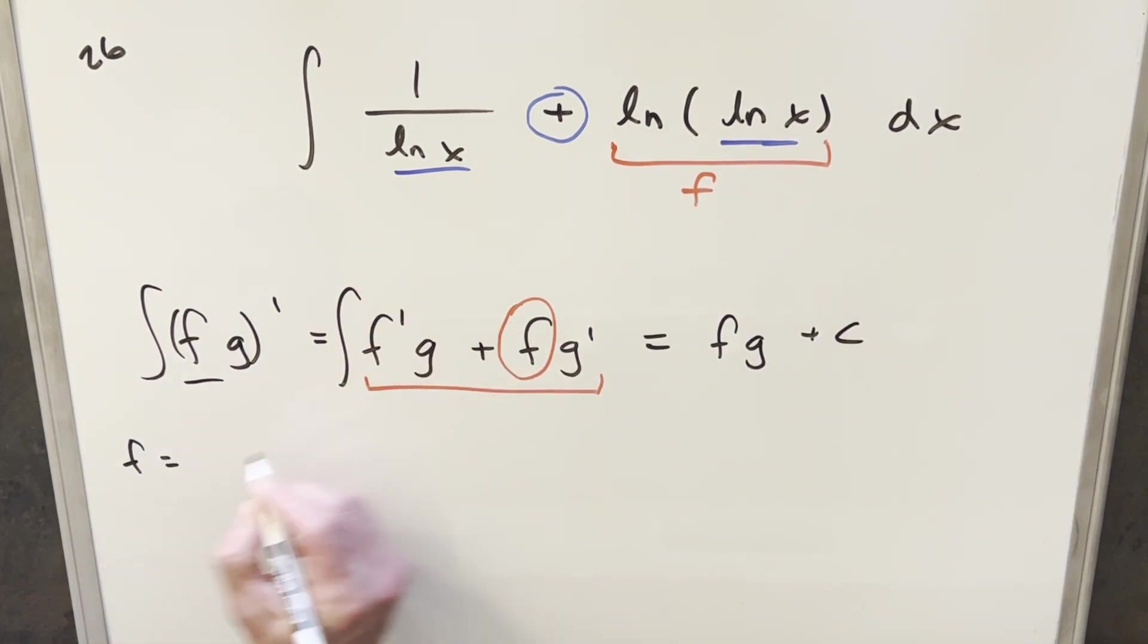So let's start out with f equal to natural log of natural log of x. Let's see what f prime is going to be by taking derivatives. The derivative is going to be 1 over natural log of x. Then we need the chain rule in this derivative, which is going to be 1 over x. So putting this all together, we're going to have 1 over x ln x.